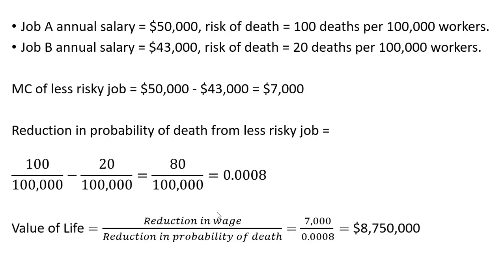Putting our formula here, the value of life is the reduction in wage divided by the reduction in the probability of death. It's going to be $7,000 divided by 0.0008, giving us a value of life estimated at $8.75 million. I hope you found this video helpful. Thank you.